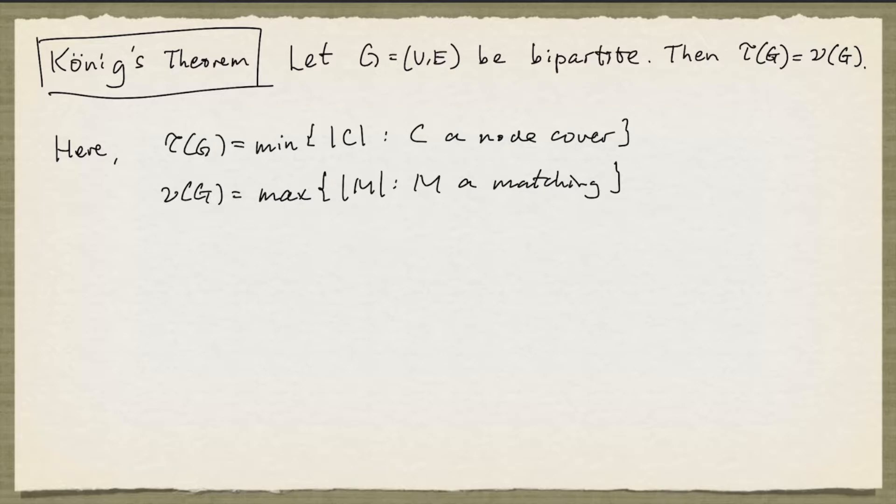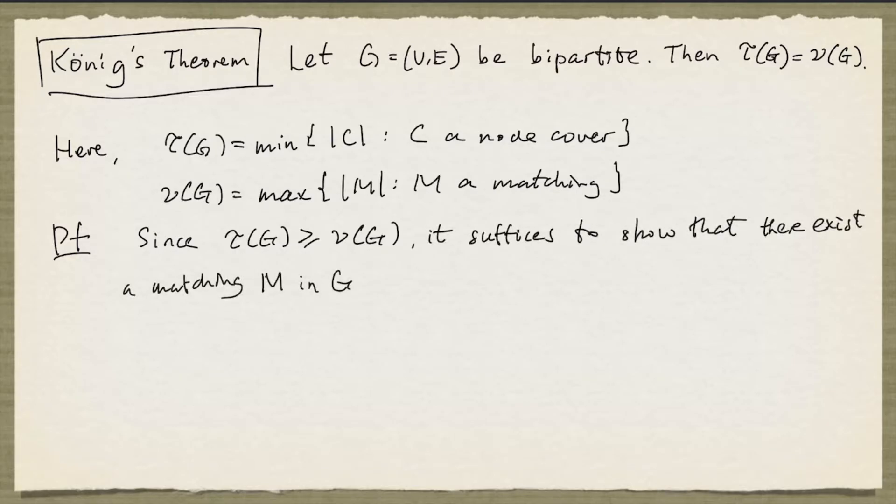Very often Koenig's theorem is proved using network flows. But we're going to give a proof that uses the perfect matching algorithm. The first thing to observe is that since we already know that τ(G) is at least ν(G), it is sufficient to show that there exists a matching M in G and a node cover C in G, such that the cardinality of M equals the cardinality of C.